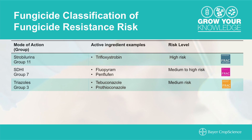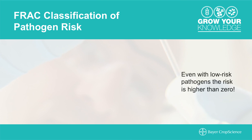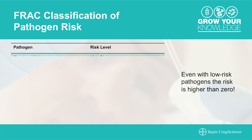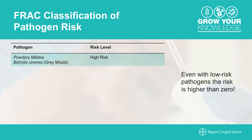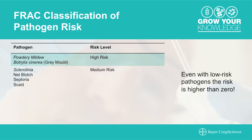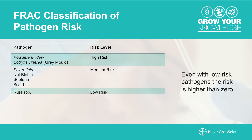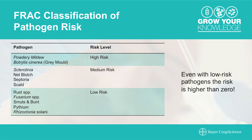We also have to consider the pathogen to evaluate our risk potential for fungicide resistance. FRAC has characterized many pathogens applicable to Western Canada and ranked them as high, medium, or low risk. Powdery mildew and grey mold are considered high-risk pathogens. Diseases such as sclerotinia, net blotch, and septoria are medium risk. And diseases such as fusarium, rust, and pythium are all low-risk pathogens.